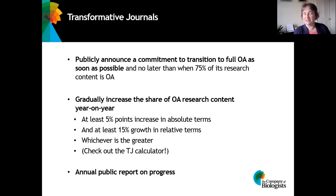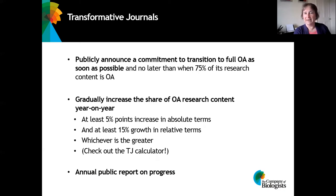This generally applies at higher percentages of open access and means that you have to show 15% growth in the number of open access articles that you're publishing year on year. You have to choose whichever of those targets is the greater, and the best recommendation is to go to the Plan S website and find the transformative journal calculator. You put in the numbers for your journal, it will calculate the two different routes to produce targets, and then you choose the higher one as your target for the coming year.